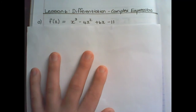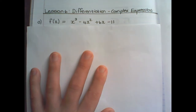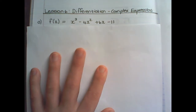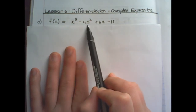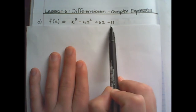Let us start with f(x) = x cubed minus 4x squared plus 6x minus 11. It is quite simple — we are going to apply the rule that we learned in lesson 4 to each term individually.